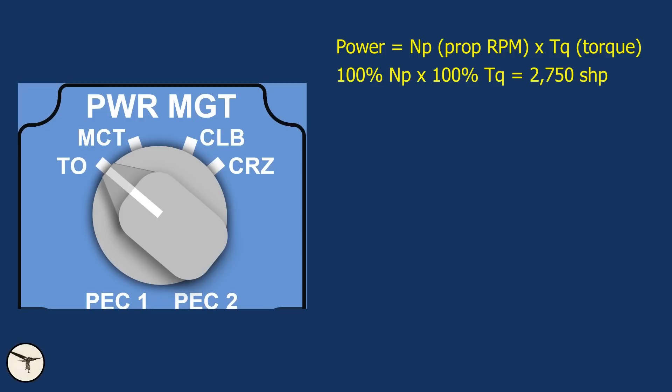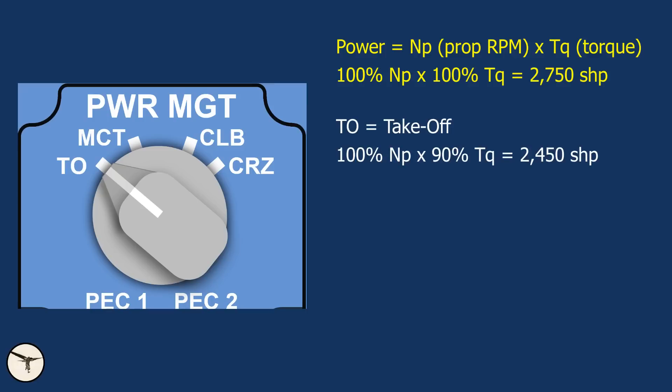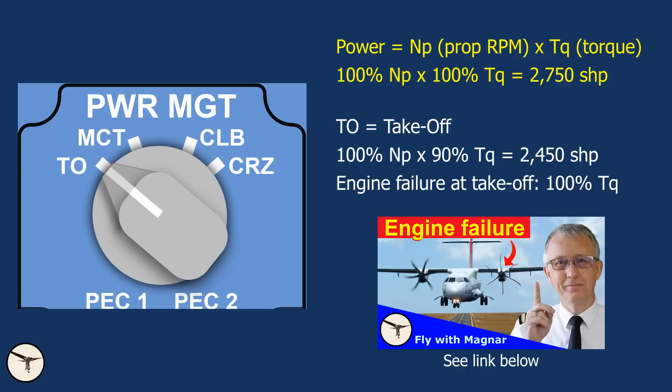The power management selector has four positions. The first is TO — takeoff. This gives 100% NP, or propeller speed, and 90% torque. In case of an engine failure at takeoff, the torque is automatically increased to 100% and the propeller of the failed engine is feathered. I have made a video about this — you find the link in the description below.